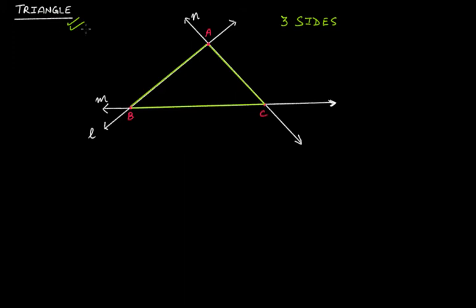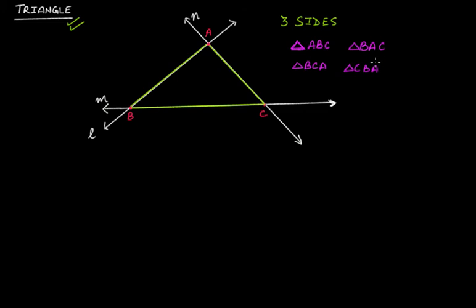Before that, to represent or denote a triangle we use this symbol — the triangle symbol — and we can write it as triangle ABC. We can also write it as triangle BAC, triangle BCA, or triangle CVA. The point is that you have three vertices and you can denote this triangle using any three vertices irrespective of the order — ABC, CAB, whatever.